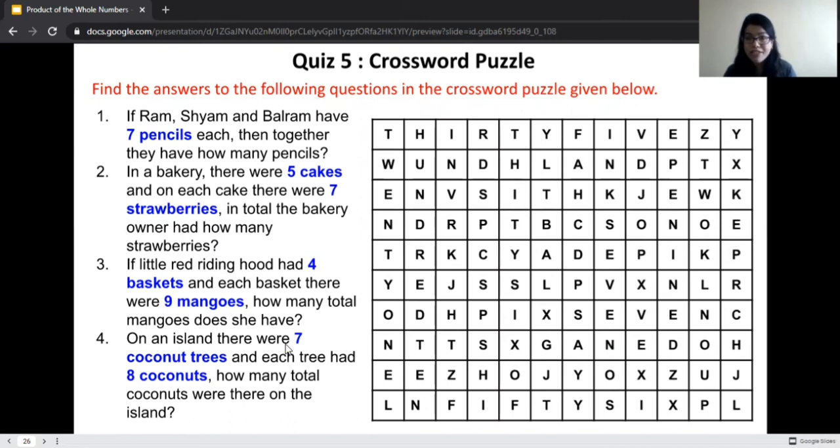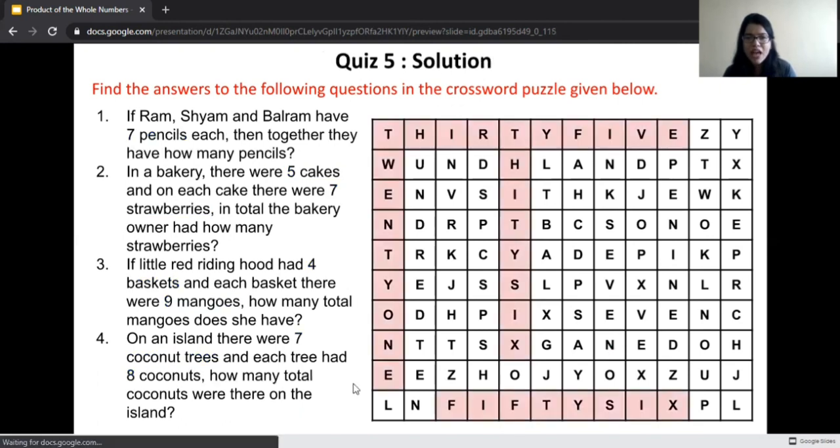Next question. On an island, there were seven coconut trees. Each tree had eight coconuts. How many coconuts were there in total on that island? Seven eights are 56. The answer is over here, 56. Very good. We have solved the crossword puzzle.